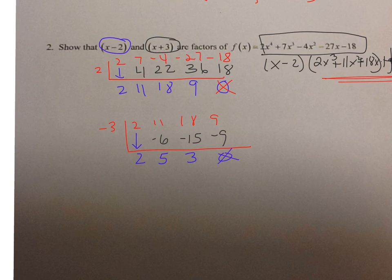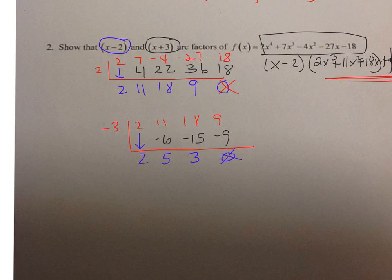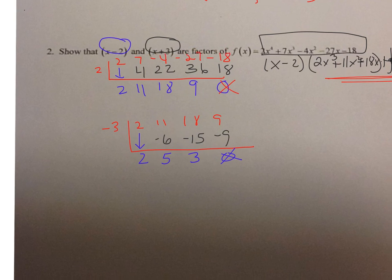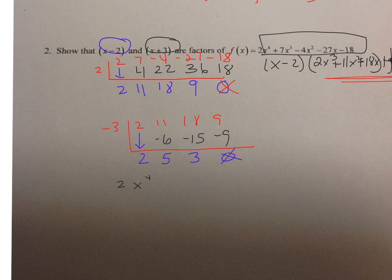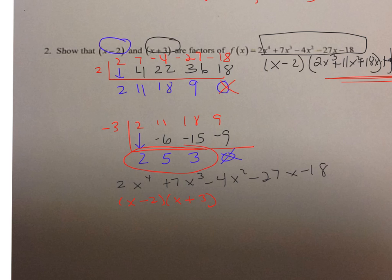So here's what I have so far. I started with 2x to the 4th plus 7x cubed minus 4x squared minus 27x minus 18. I know x minus 2 is a factor, x plus 3 is a factor, and when I did my synthetic division I'm left with 2x squared plus 5x plus 3. Now I have a trinomial, and I know how to factor trinomials. So we'll do a master product.